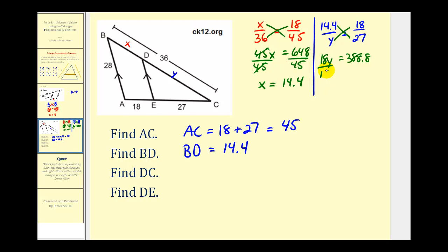And now we'll divide both sides by 18. And Y is equal to 21.6. Therefore, the length of DC is equal to 21.6 units.